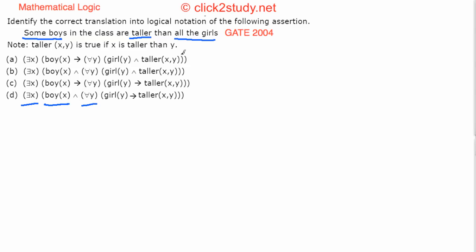Alright, so we come to the next example: identify the correct translation into logical notation of the following assertion — 'some boys in the class are taller than all the girls.' So we're talking about some boys and all the girls, where those some boys are taller than all the girls.